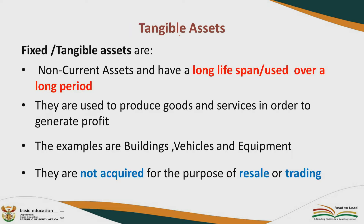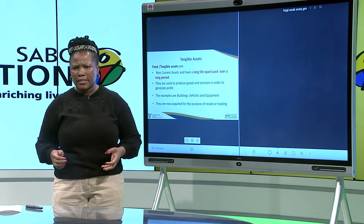Let us look at the definition of tangible assets. Tangible assets are categorized as non-current assets because they have a longer lifespan and can be used by a business over a longer period of time. These assets are used to produce goods and services so that the business can generate profit. Examples of assets are buildings, vehicles, and equipment. These assets are not acquired for the purpose of resale or trading — the business acquires them to produce goods and services.